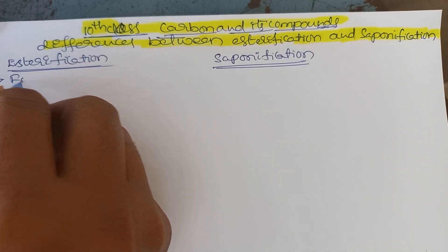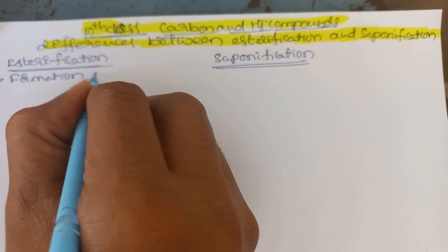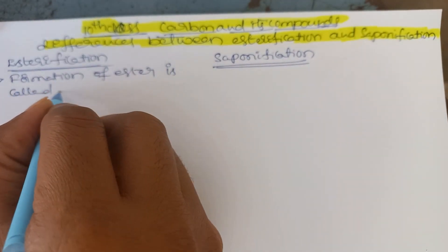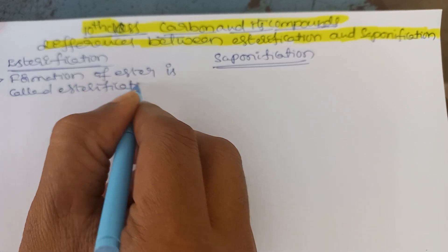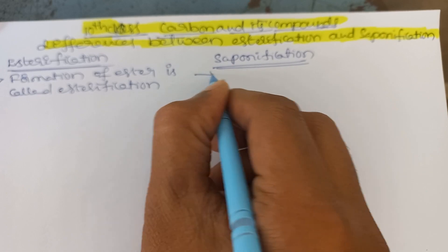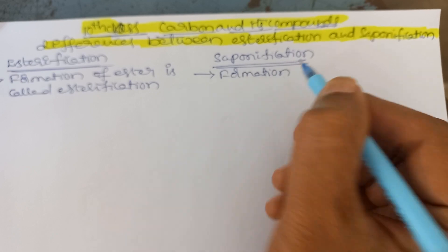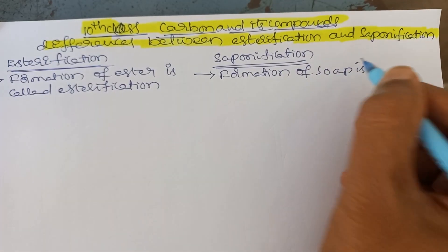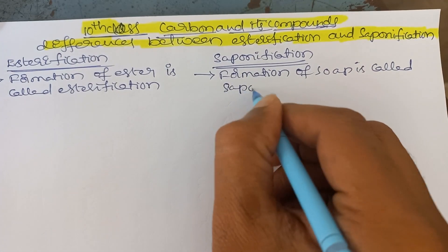Esterification is the formation of ester — formation of ester is called esterification. Next, formation of soap is called saponification.